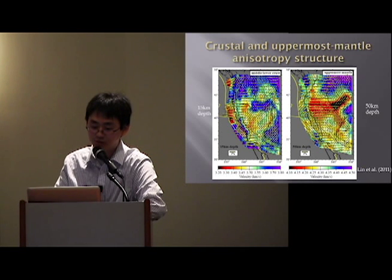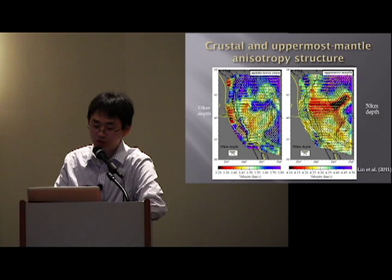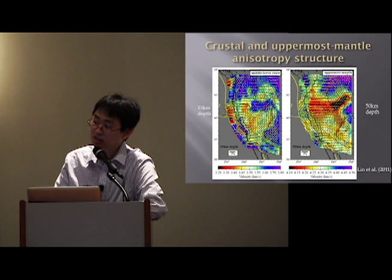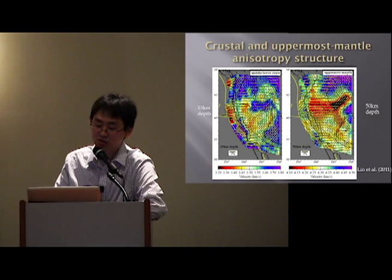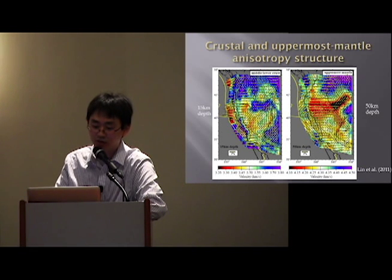Of course, more study will be needed. Looking at the fast anomaly near the San Andreas fault, it is mostly fault-parallel, and going north through a triple junction, it changes rapidly toward the direction of subduction of the Juan de Fuca plate.